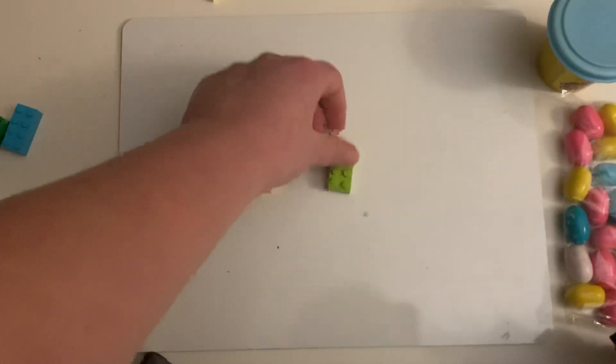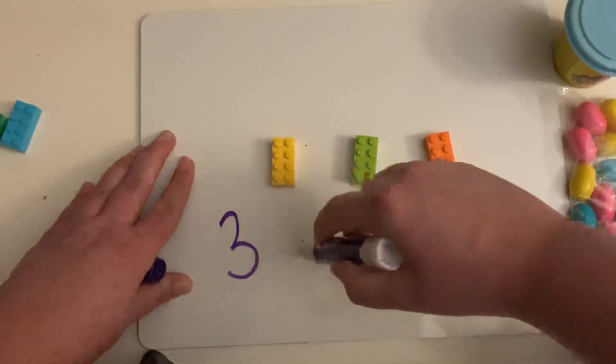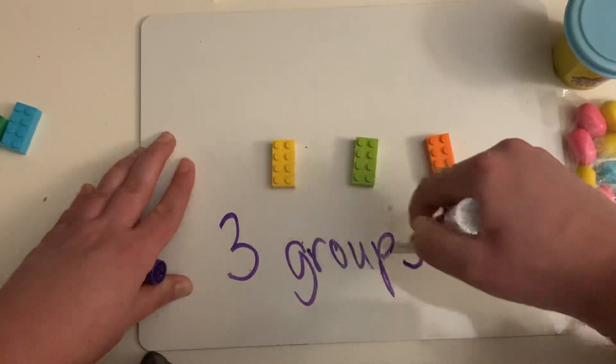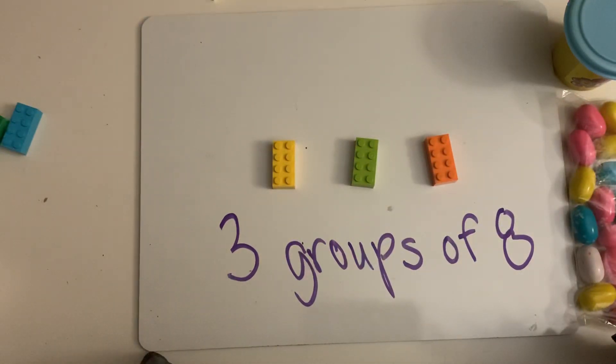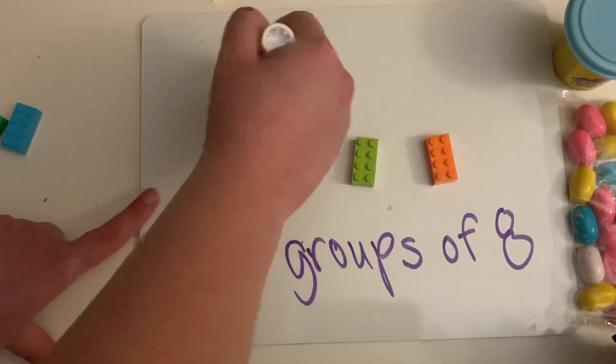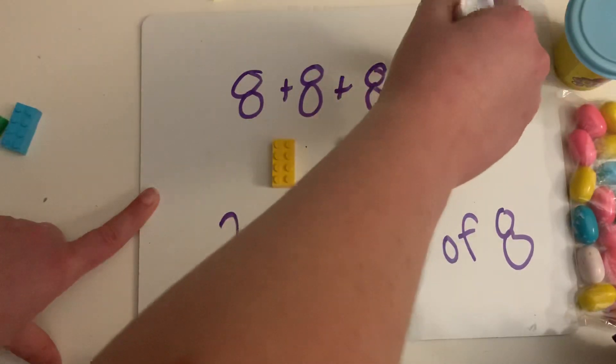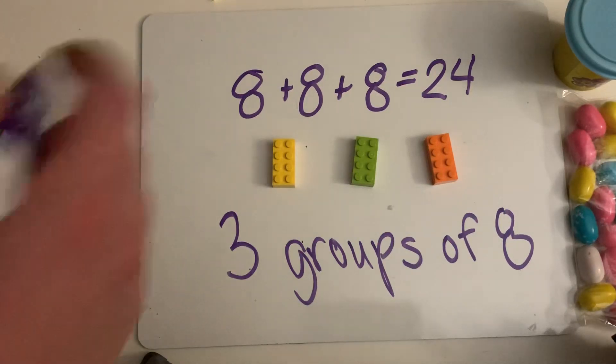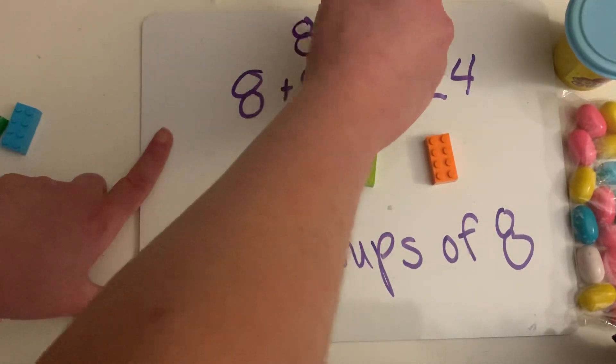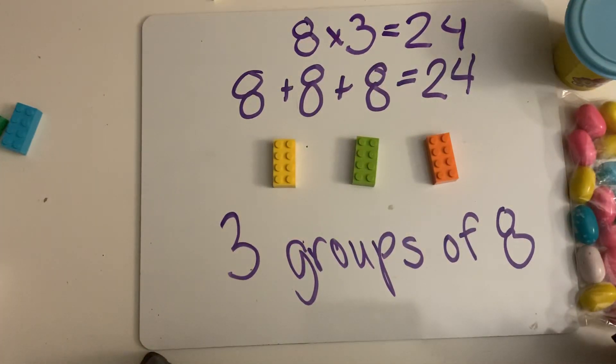Now, if I have three of those Legos, it means I have three groups of eight. Another way, a repeated addition sentence that I could write is eight plus eight plus eight equals 24. So three groups of eight equals 24. I could also write eight times three equals 24. That is building our multiplication problem.